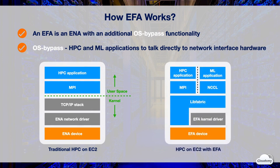With the EFA device, HPC and machine learning applications can use MPI or NCCL to interface with the LibFabric API, which enables applications to bypass the kernel and communicate directly with the EFA device. This reduces the overhead of context switching between user space and kernel, and makes HPC applications run more efficiently.